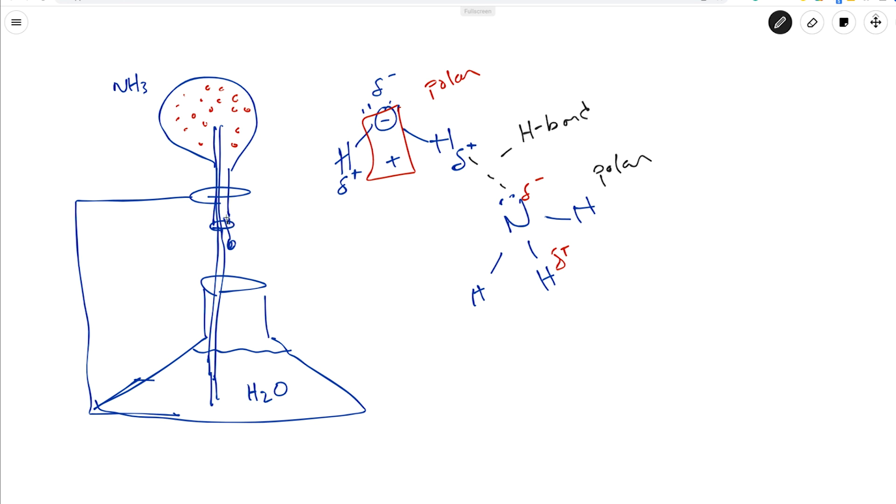And so when the ammonia - once you squirt the water into the flask, the ammonia and the water, they love each other, and they start dissolving. But when they start to dissolve, what happens is you keep having less and less ammonia. Boom, all these start disappearing.